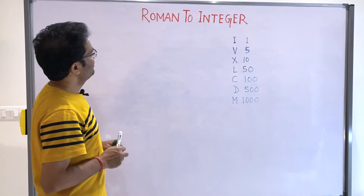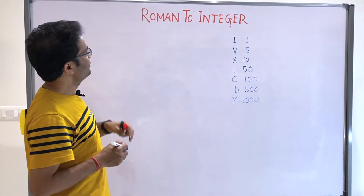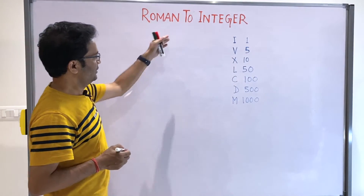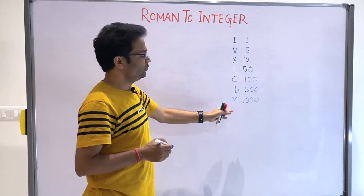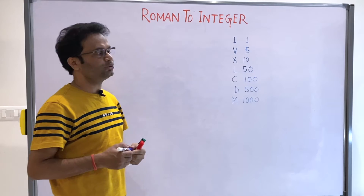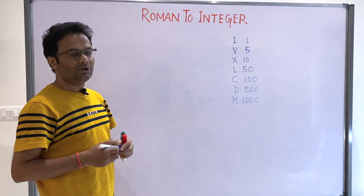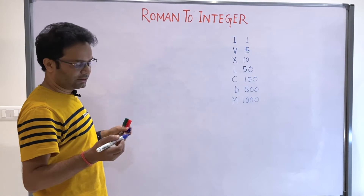This is a very small problem: if you have been given a Roman numeral and you have to convert it into an integer, how can you do that?